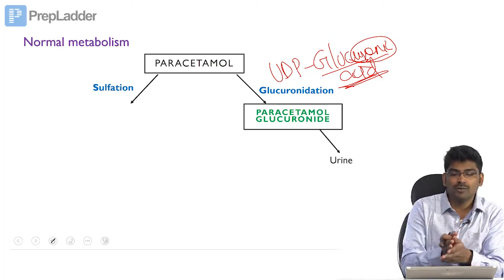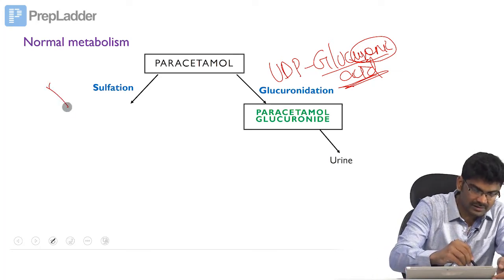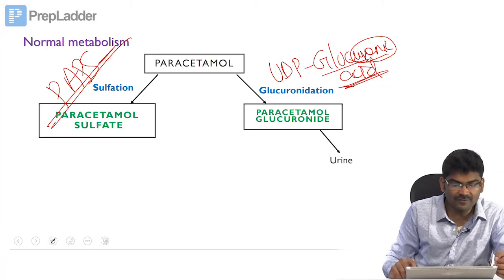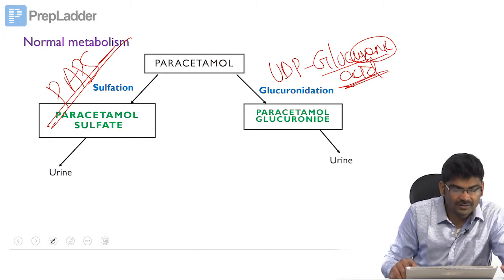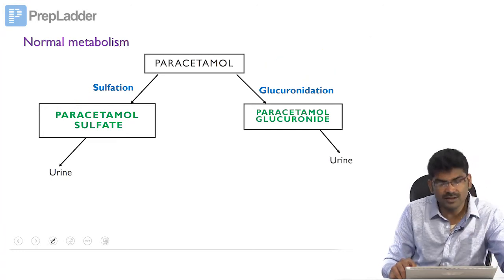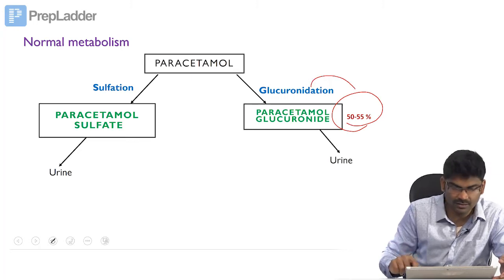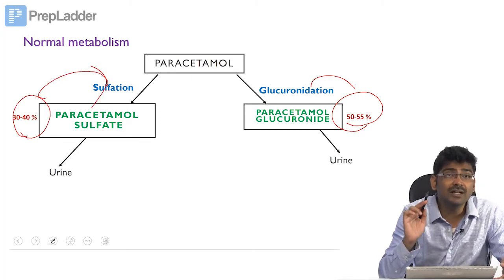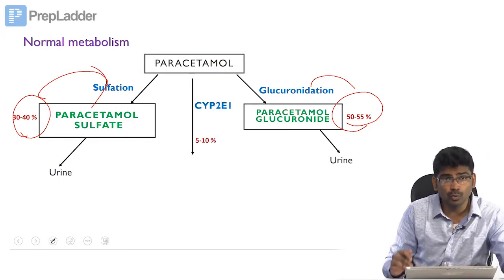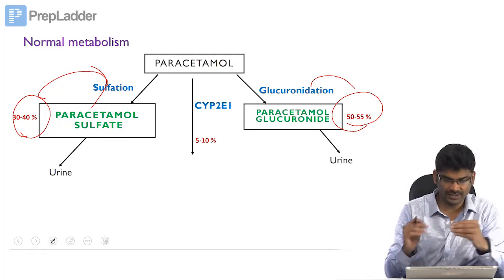Paracetamol also undergoes another conjugation reaction — sulfation — where the donor is PAPS, producing paracetamol sulfate, which is excreted in the urine. The majority follows conjugation reactions: 50 to 55 percent is glucuronidation and 30 to 40 percent is sulfation. A very minor amount goes through the cytochrome P450 mediated mixed function oxidase reaction.